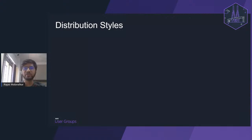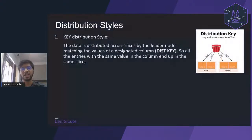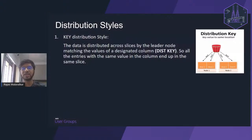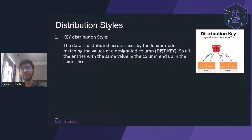There are four different distribution styles on Redshift. The first is KEY distribution style. As the name suggests, the distribution key defined for the table is leveraged by the Redshift cluster to distribute data. Depending upon the values in that particular column, your data will be distributed across different nodes. When choosing a distribution key, first check whether the records for that column are properly distributed across all unique values. If one unique value holds 40% of the records, that's not a good distribution key — it will cause data skewness.